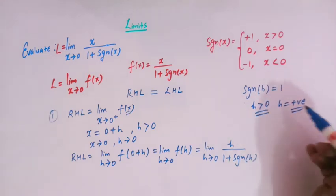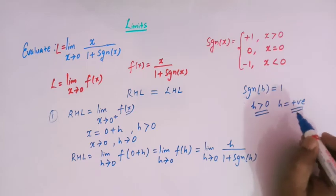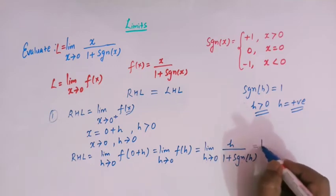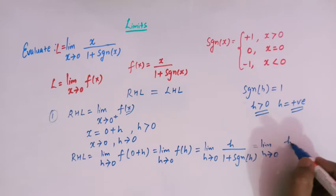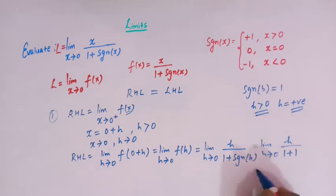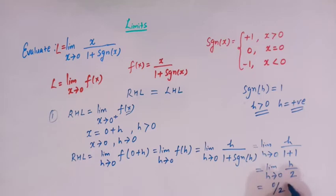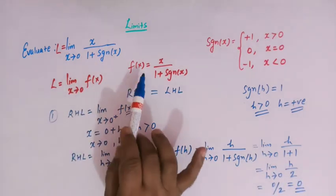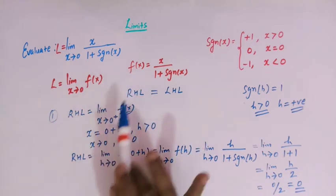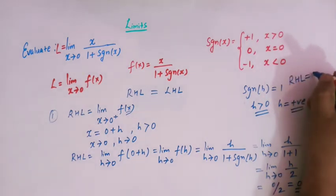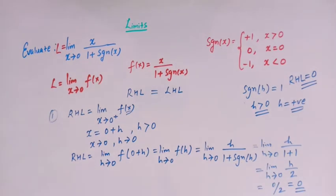Substituting signum of h equals 1, we get limit h tends to 0 of h over 1 plus 1, which is limit h tends to 0 of h over 2. Putting h equal to 0 gives 0 over 2, which equals 0. Therefore, RHL equals 0.